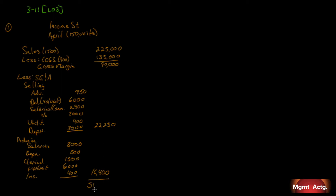Taking gross margin less selling expense less administrative expense, we end with $51,350 in operating profit. That is the traditional format income statement organized by function — cost of goods sold is a functional expense, selling expense is a functional expense, and administrative expense is a functional expense. Now we're going to classify costs behaviorally.